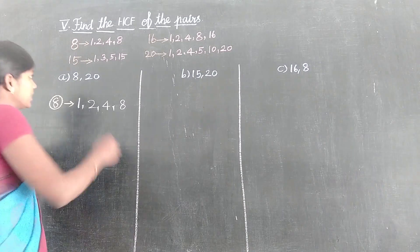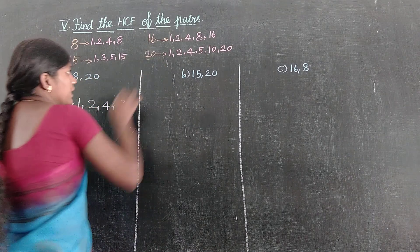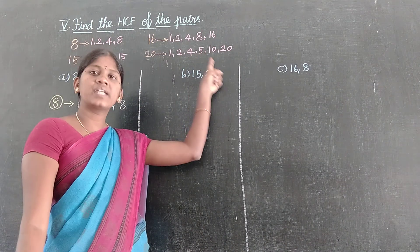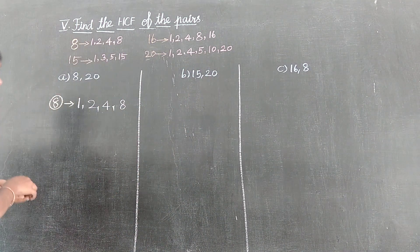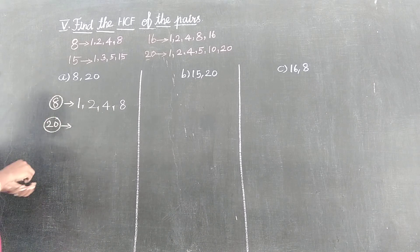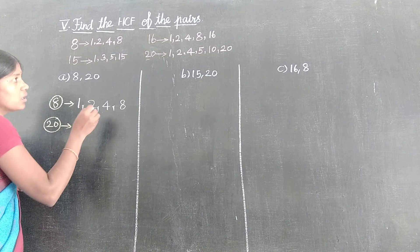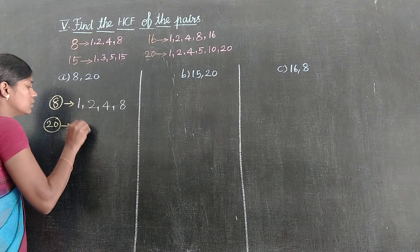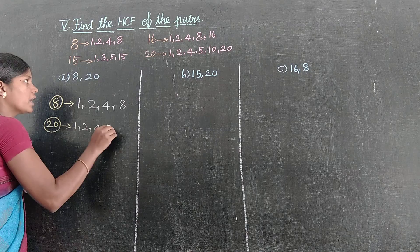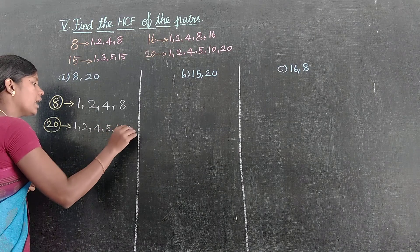Next is 20. 20 kind of factors: 1, 2, 4, 5, 10 and 20. So 20 kind of factors on the right one: 1, 2, 4, 5, 10 and 20.